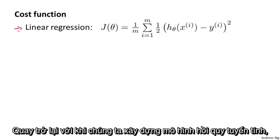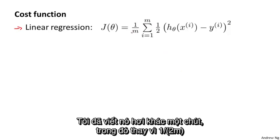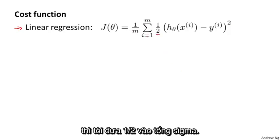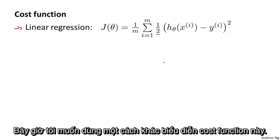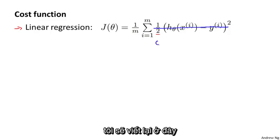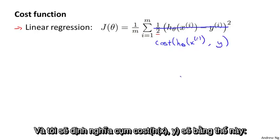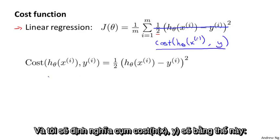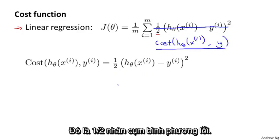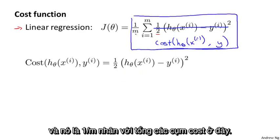Back when we were developing the linear regression model, we used the following cost function. I've written this slightly differently, where instead of 1 over 2m, I've taken the one-half and put it inside the summation. I want to use an alternative way of writing this cost function, defining cost of h(x), y to be equal to one-half of the squared error. So the cost function is 1 over m times the sum over the training set of this cost term.